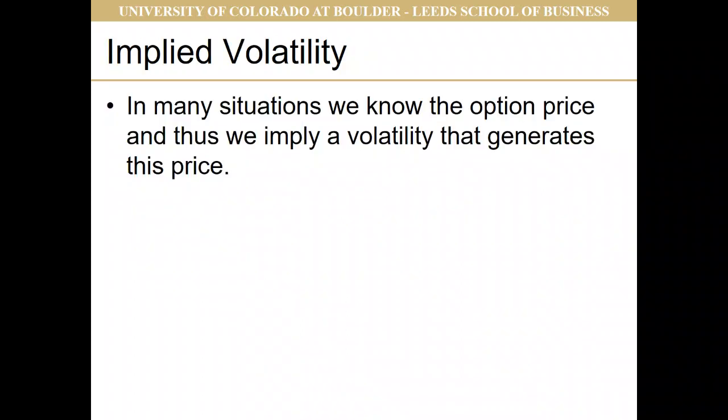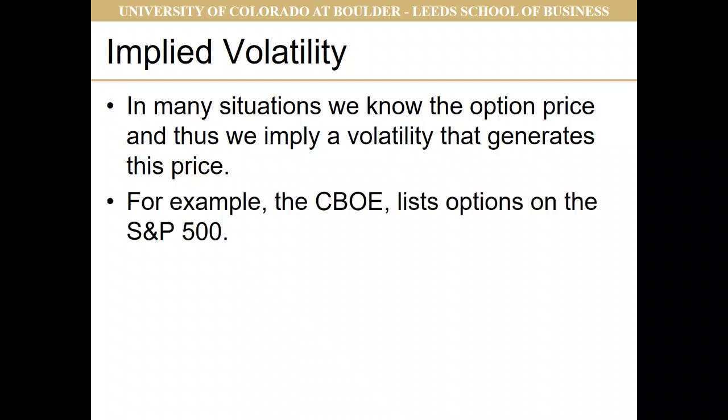In many situations, our goal is to find the volatility, and we can use that volatility to imply the option price. This often works in reverse — namely, we know the option price and want to know what volatility generated that price. For example, the CBOE lists options on the S&P 500 and gives us bid and ask prices, so we know the option price and we're trying to find the volatility.